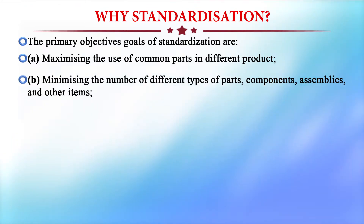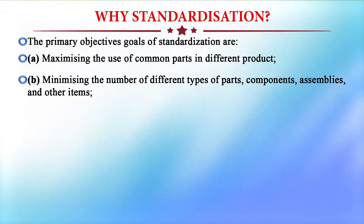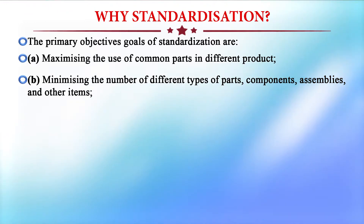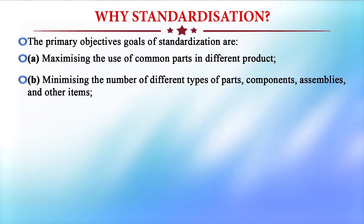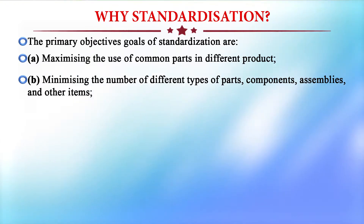Another objective is minimizing the number of different types of parts, components, assemblies, and other items. Types can be reduced — if we produce all parts for only one particular machine, it is not profit-oriented. That is why standardization is helpful. By standardizing, products are manufactured in mass production and can be utilized for any type of machine or any type of product.